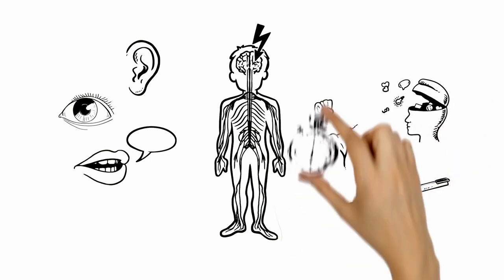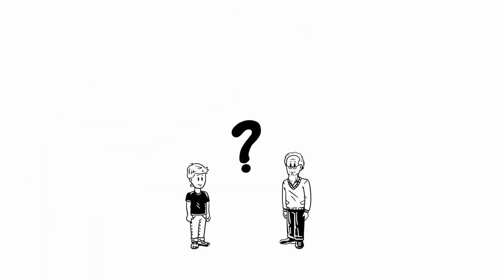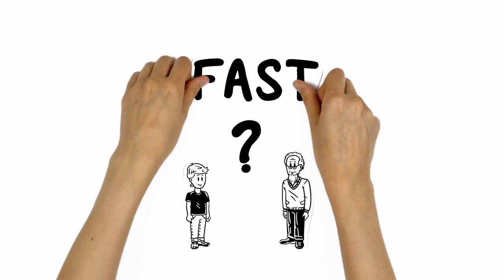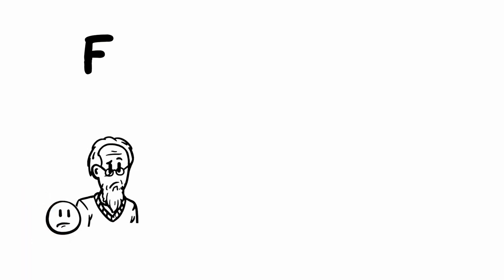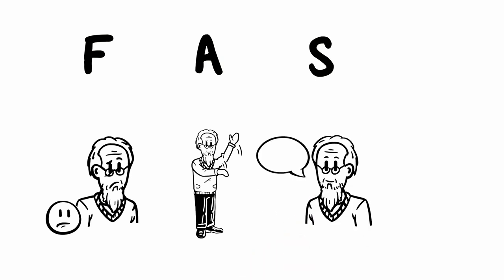All these symptoms can occur suddenly within minutes. So how can Mike check if his grandfather might be having a stroke? By using the FAST test. The F stands for facial weakness: can the person smile? Has their face fallen on one side? The A is for arm weakness: can the person raise both arms and keep them there? The S means speech problems: can the person speak clearly and understand what you're saying? Is their speech slurred?